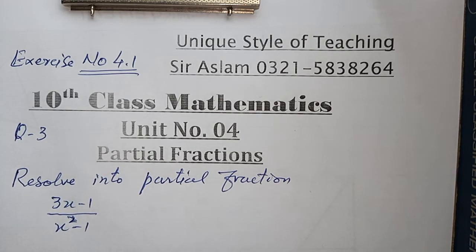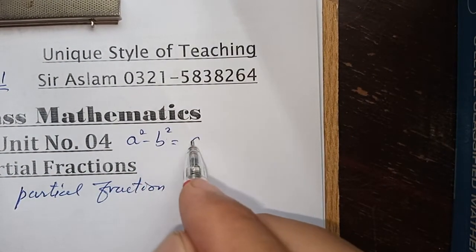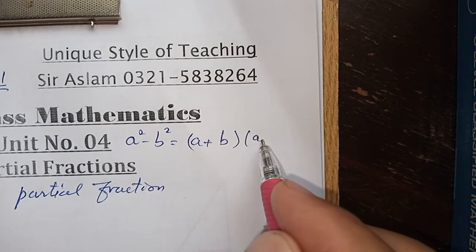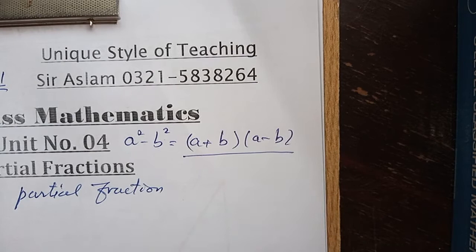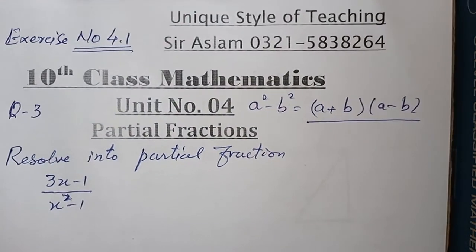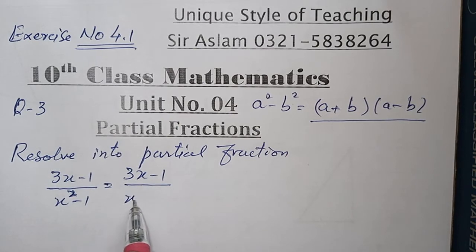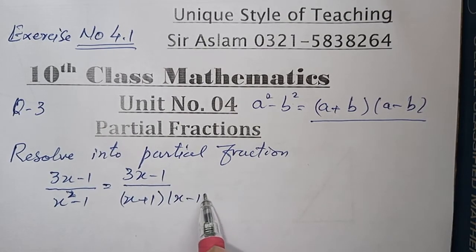Denominator में सबसे पहले application करेंगे formula का a²-b². A plus B into A minus B. अगर आपके formulas weak हैं तो 9th class में Unit 4 के शुरू में मैंने एक पहली video formulas पे upload किया हुआ है तो उसको आप देख सकते हैं। यह हो जाएगा (3x-1) upon (x+1) into (x-1).